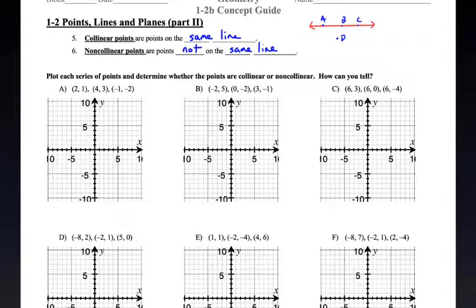The shape you can make with non-collinear points is a triangle with three points. If you can make a line, they're collinear. Now, plot each series of points and determine whether the points are collinear or non-collinear. How can you tell? Well, let's start by just plotting these points.